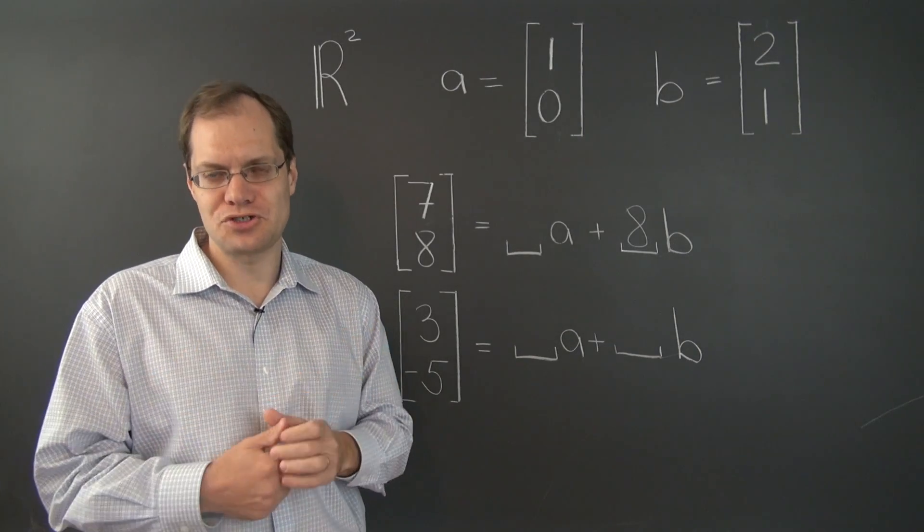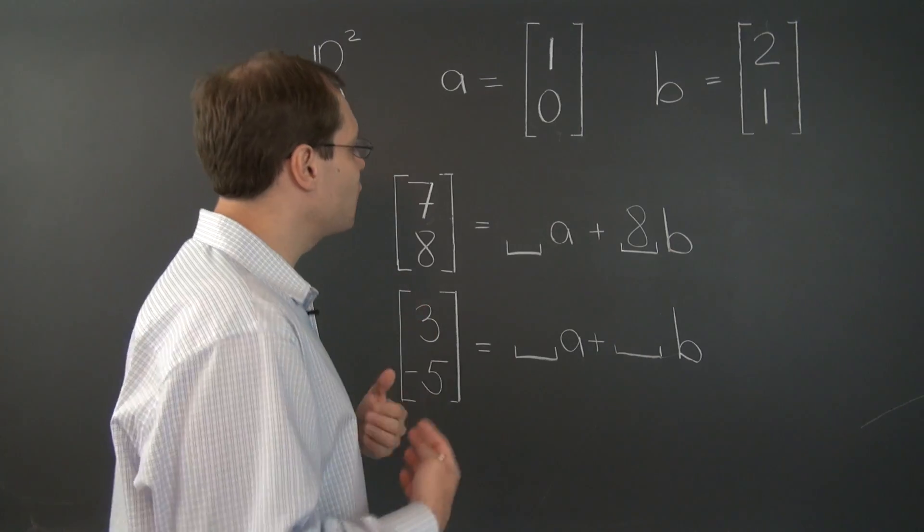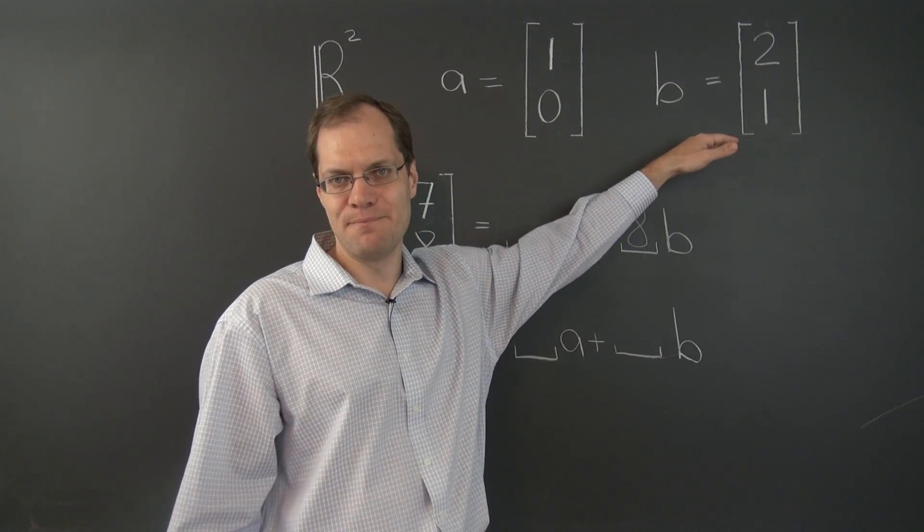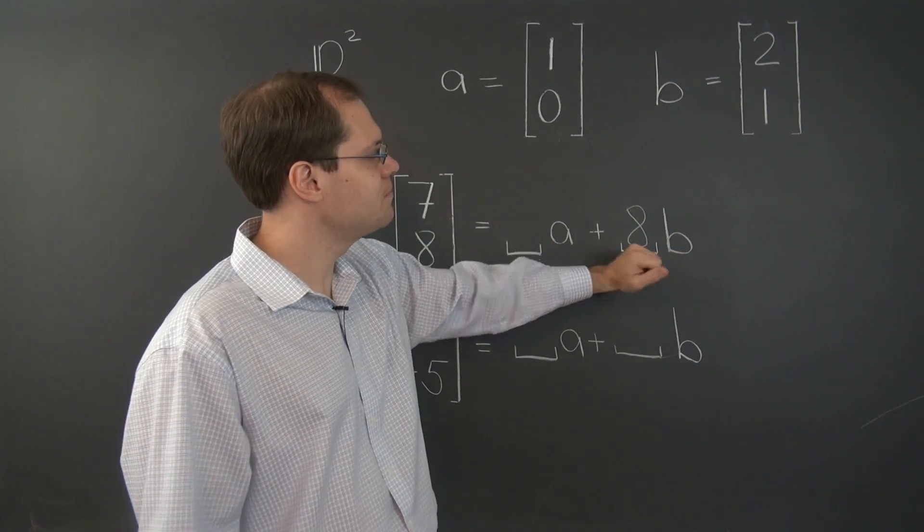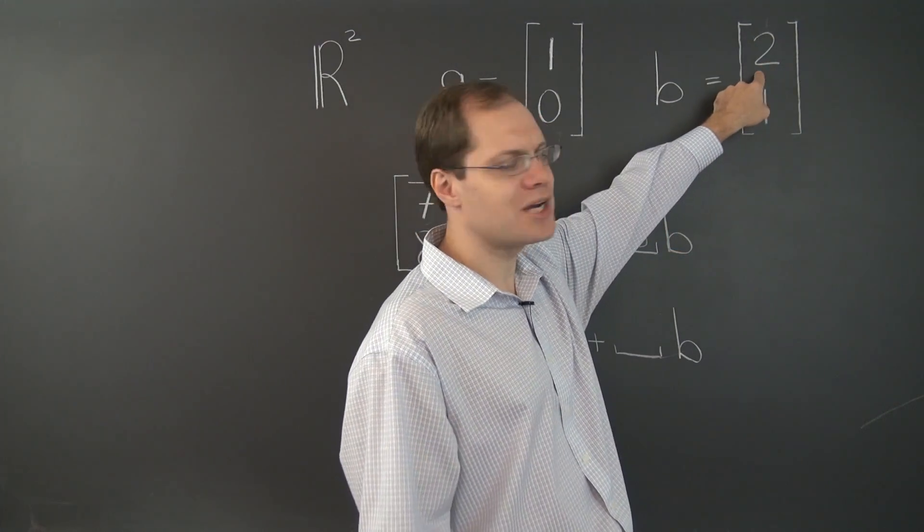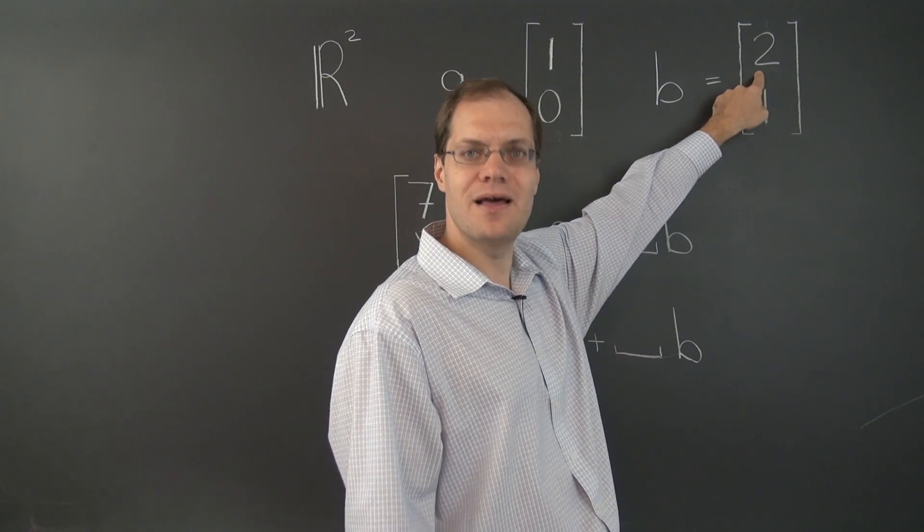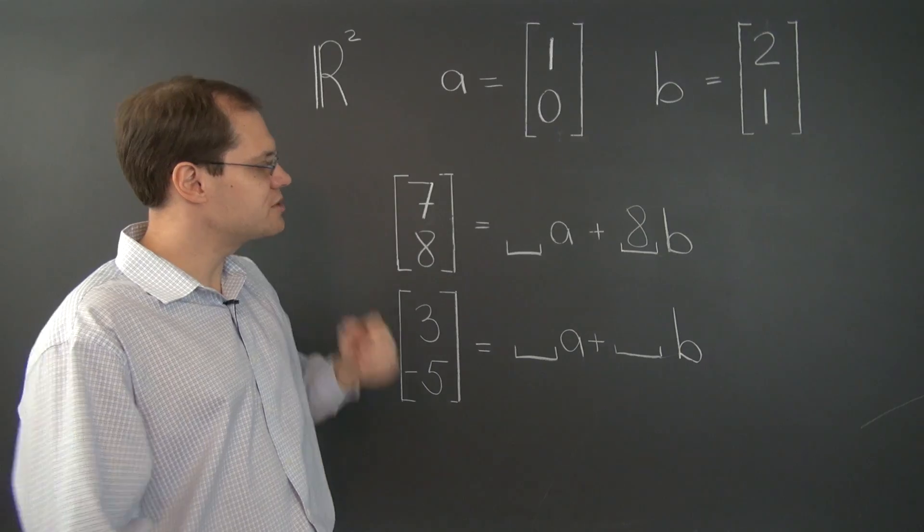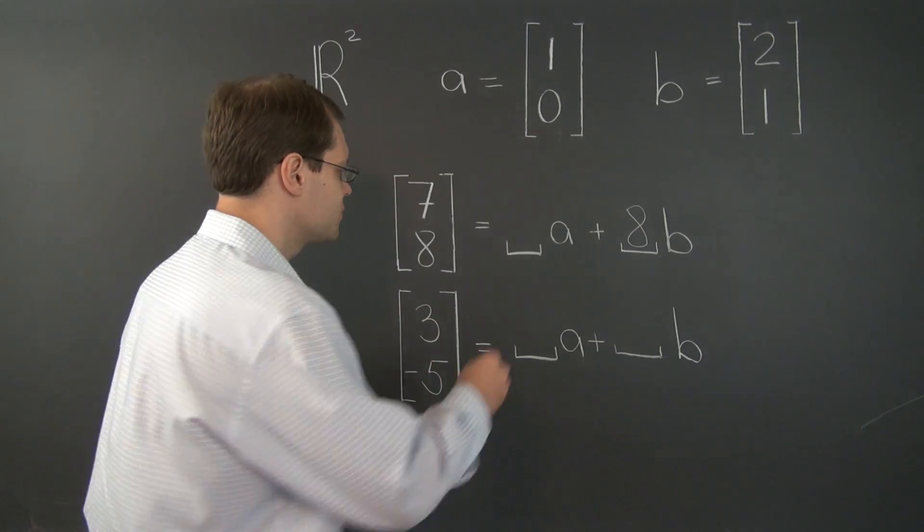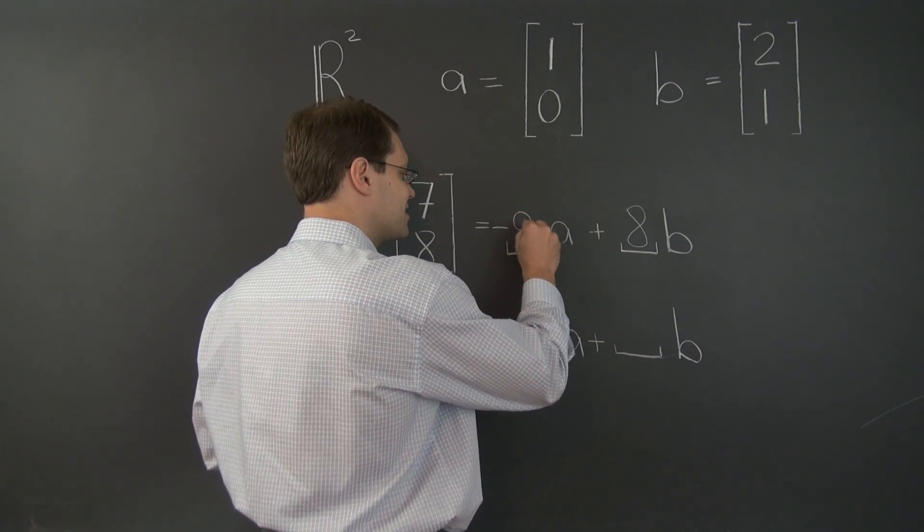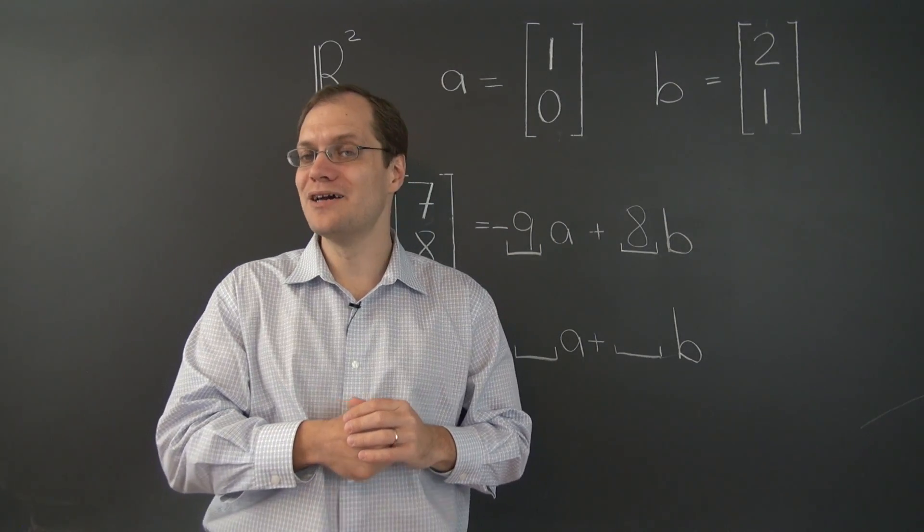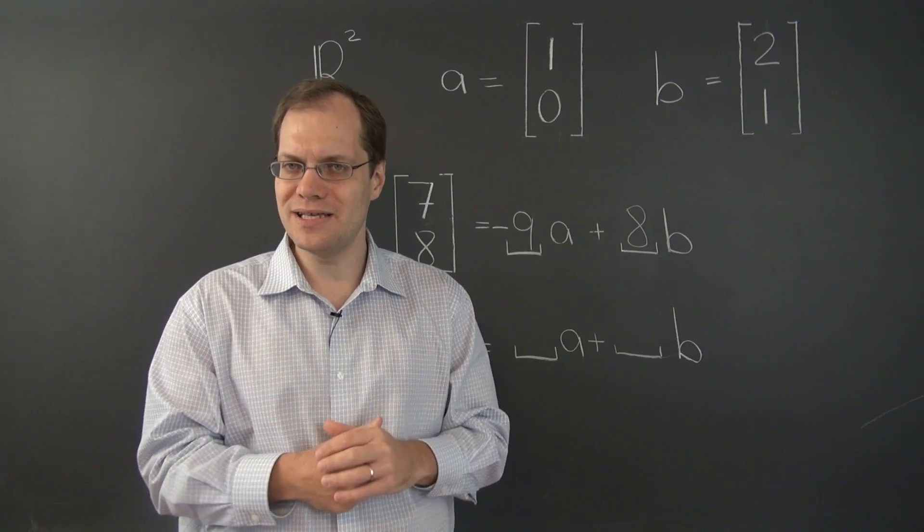That's the bootstrapping approach, which was afforded to us by this very special choice of vectors A and B. So let's complete this task. We have 8 of B, which means that in the first entry, we have a contribution of 16. We have to go from 16 to 7, which is subtracting 9. So we have to take minus 9 of A. And the first decomposition problem by the bootstrapping approach is complete.